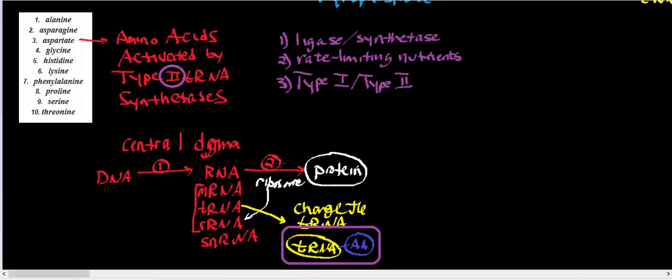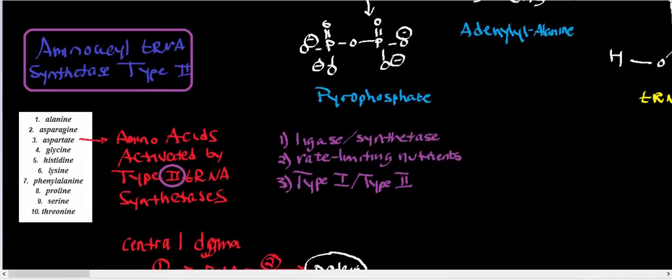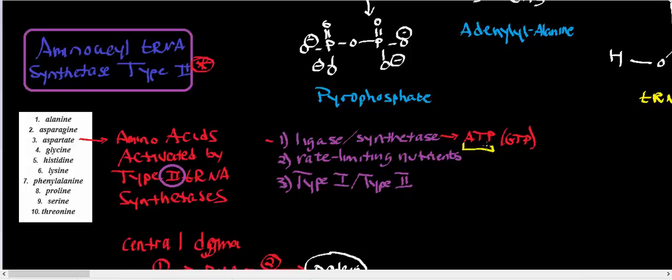The enzyme that catalyzes the ligation of an amino acid to a specific tRNA is aminoacyl-tRNA synthetase. The name 'synthetase' gives a clue about one of the substrates: synthetases operate through adenosine triphosphate (ATP), with a few exceptions in the Krebs cycle that use GTP. Whenever you have a ligation reaction that requires ATP, that enzyme is called a synthetase, and aminoacyl-tRNA synthetase uses ATP energy to ligate the amino acid to the specific tRNA.